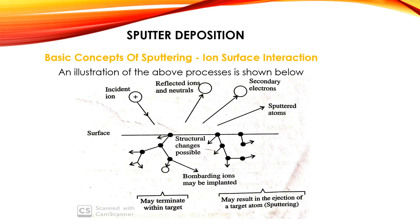Here we can see the visual representation of ion-surface interaction. When the ions are incident on the surface with enough energy, some of the ions may be reflected or neutralized at the surface, as shown in the figure. If the incident ion has sufficient energy, the surface produces secondary electrons. Some ions are trapped or buried in the target material. Due to the impact of the incident ion, there are structural rearrangements in the target material, and it may also cause a series of collisions between the atoms of the target.